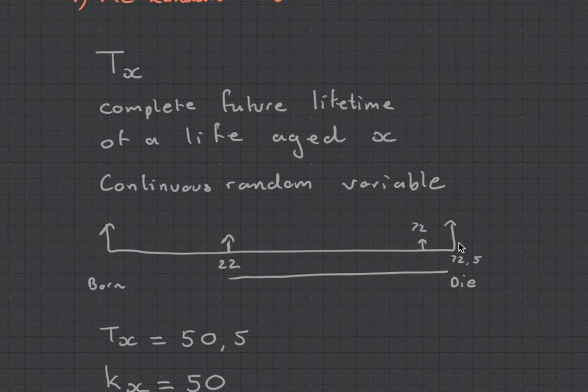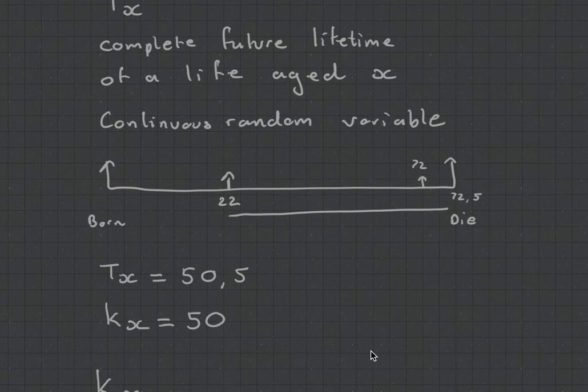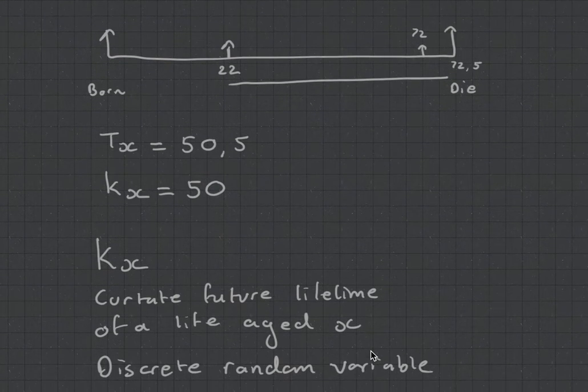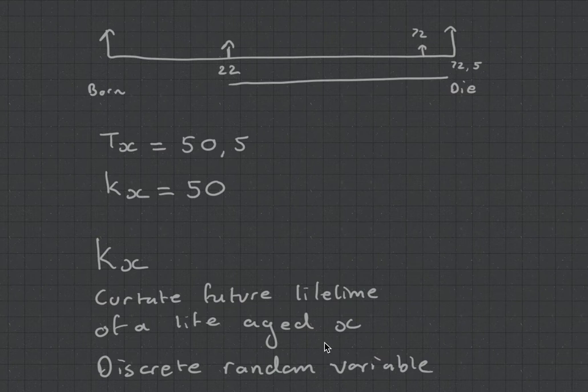I want to stress again that this is a random variable, so this is going to have an expected value, this is going to have its own variance. We're not sure exactly when I'm going to die. Now, let's look at something just a little bit simpler, and that is Kx. Kx is the curtailed future lifetime of a life aged x. The big difference is that this is a discrete random variable.